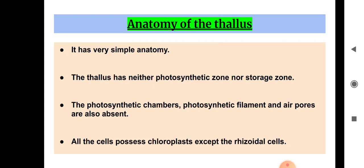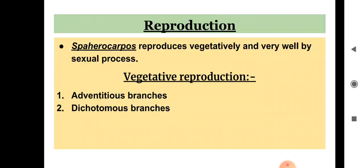All the cells of the thallus possess chloroplasts, as they are green in color, so they are rich in chloroplast. However, the rhizoidal cells lack chloroplast — they are colorless.